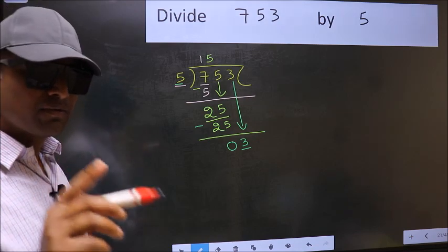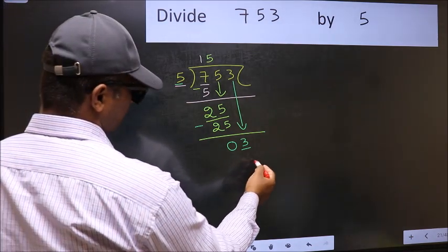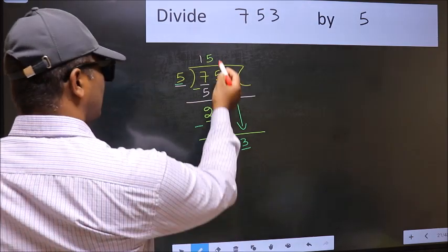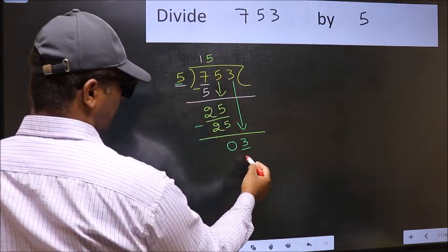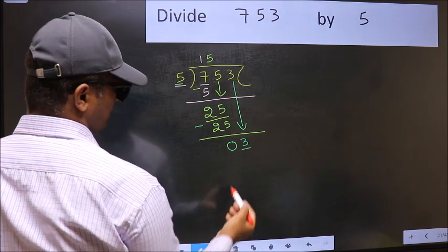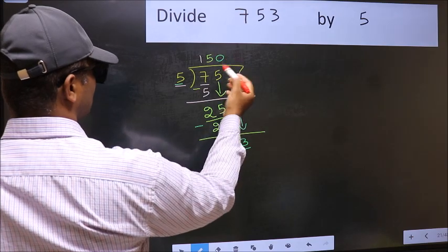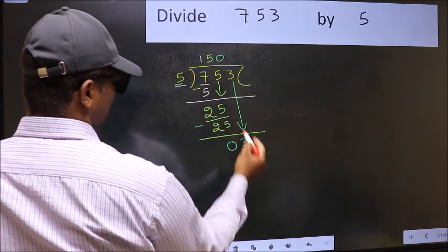Instead, what you should think of doing is, what number should we write here? If I take 1 here, we will get 5. But 5 is larger than 3. So what we should do is, we should take 0. So 5 into 0, 0.